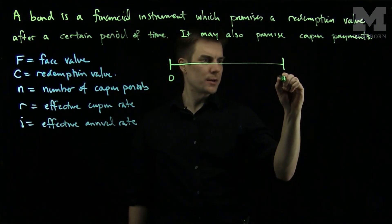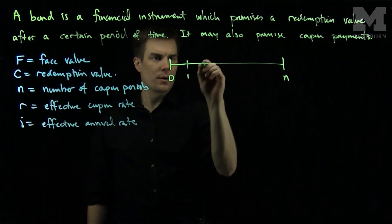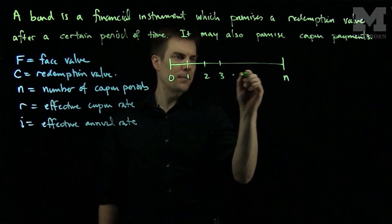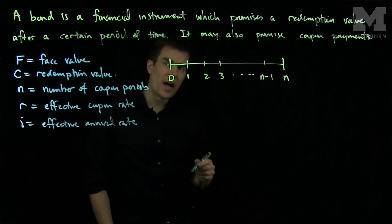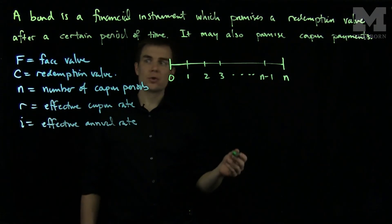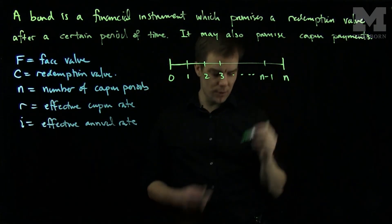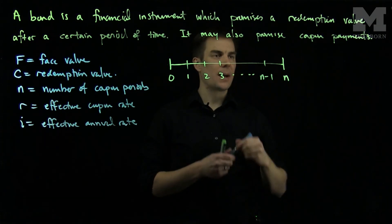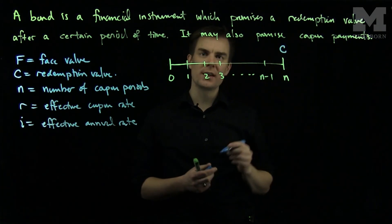Here is time zero, and here is time N. So what will happen with a zero coupon bond is you'll just simply be given the redemption value at the final time. So for a zero coupon bond you get C at the very end of the day.